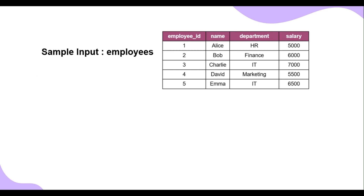Now let's look at the DROP command. The DROP command permanently deletes the entire table along with all its rows and removes the table structure from the database. Once executed, it cannot be rolled back and the table will no longer exist. The syntax is: DROP TABLE table_name. Executing this command will remove the employees table and all its data permanently. Trying to access the employees table afterward will result in an error since it no longer exists.